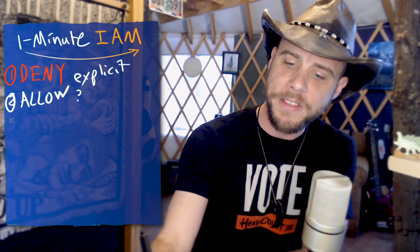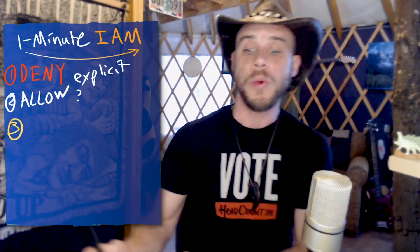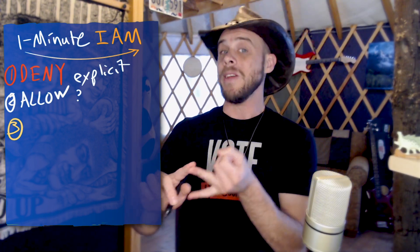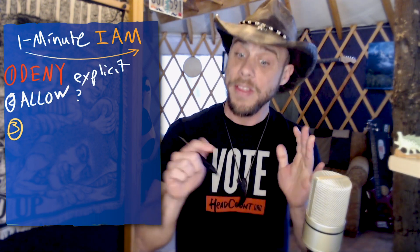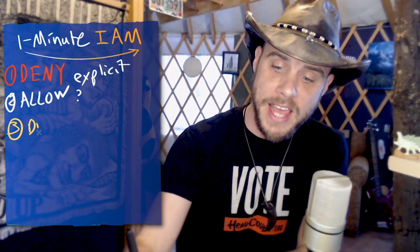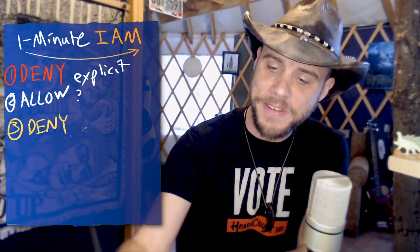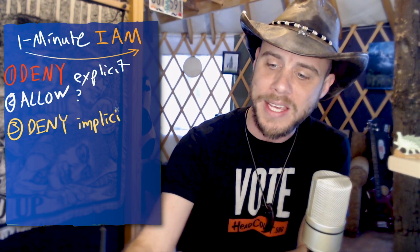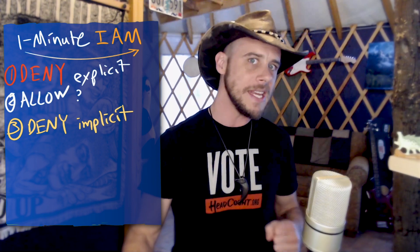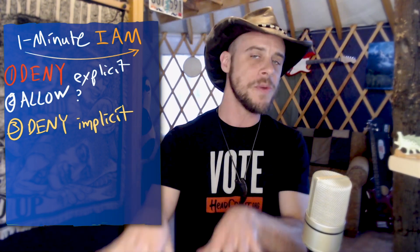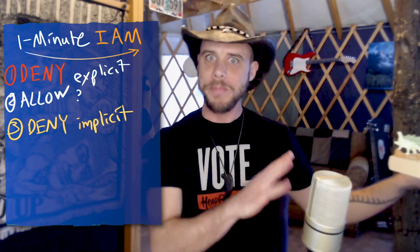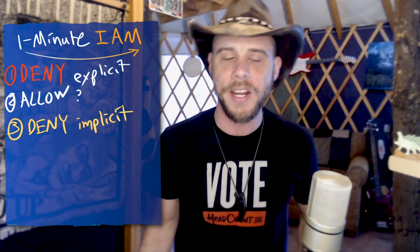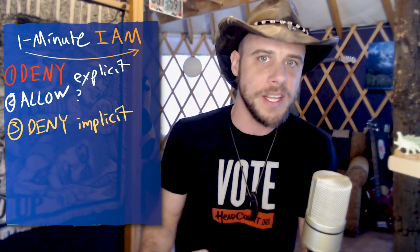This brings us to the third and final check: if it wasn't explicitly denied and it wasn't explicitly allowed, then we are back into another deny scenario. This is the implicit or implied deny — the catch-all that says, if they didn't block it and nobody allowed it, then we're just going to take the safe road and deny any actions on that particular call.